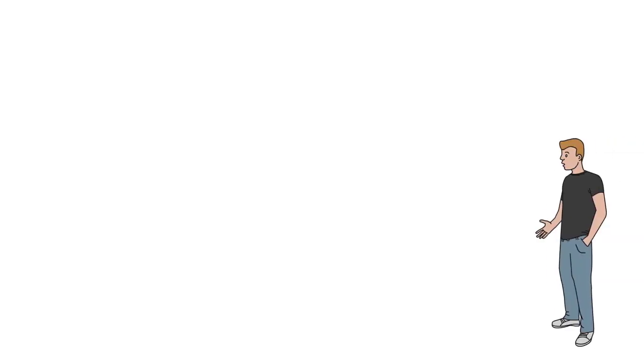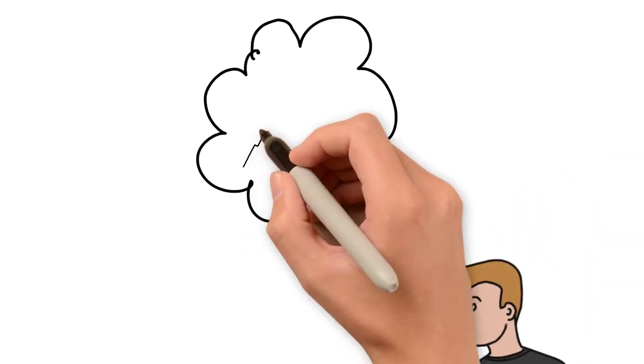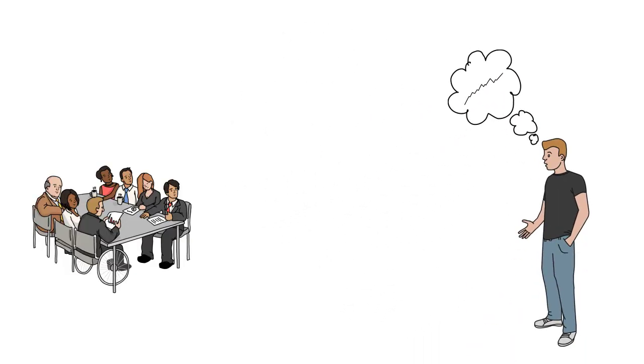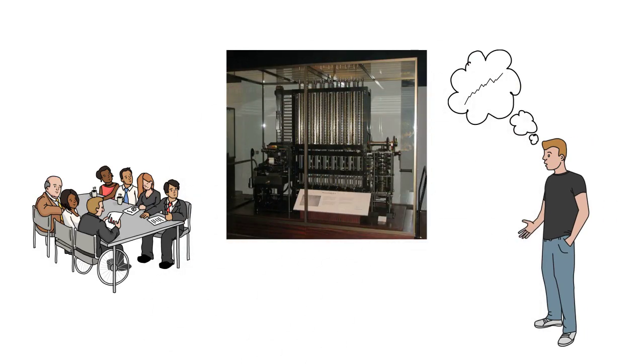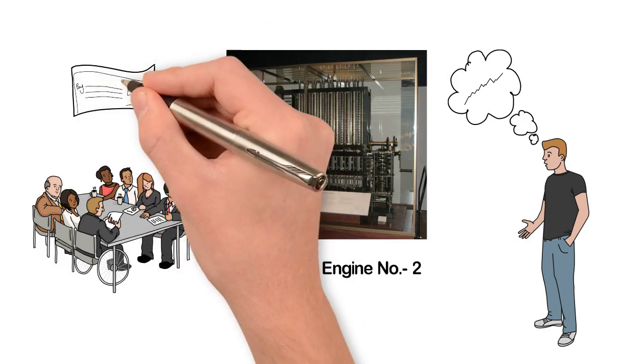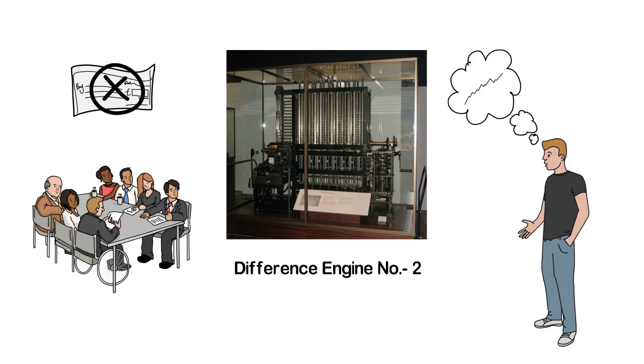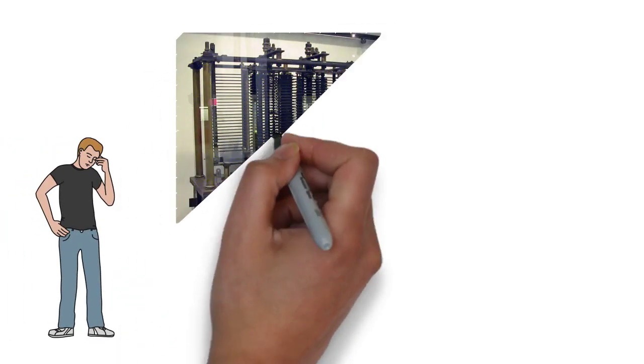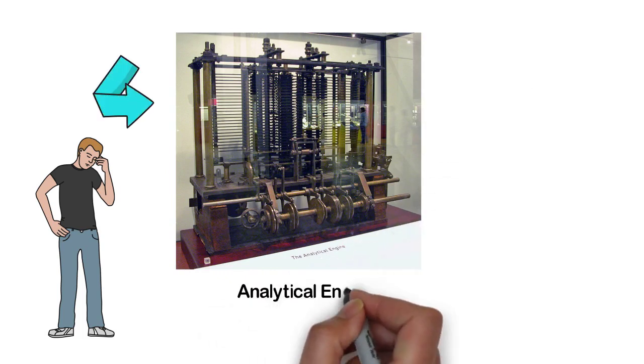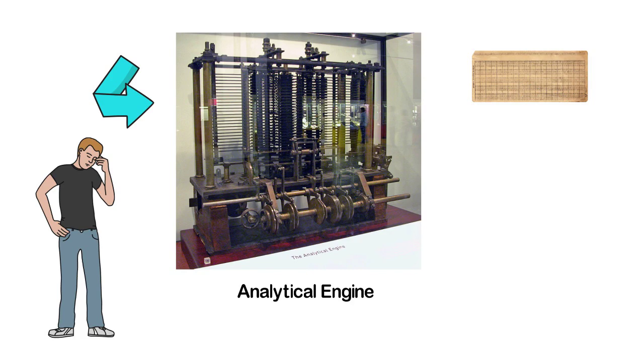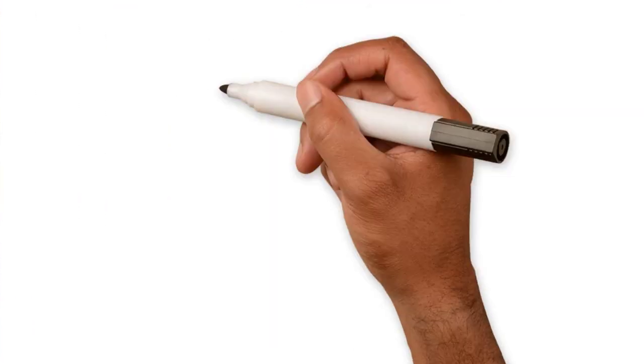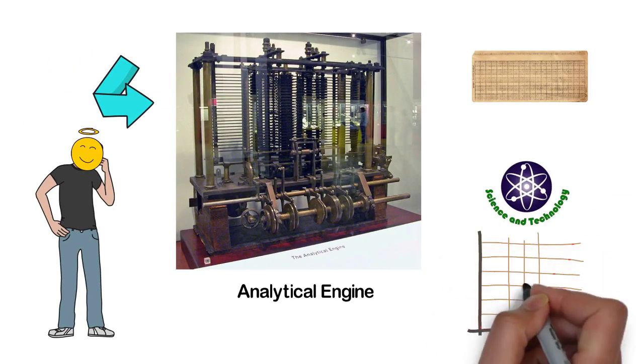However, he didn't complete this machine and instead decided to create an improved version. He started working on a new machine called the Analytical Engine, a more complete and advanced design. It was the first programmable machine capable of analog calculations, which we consider the first computer.